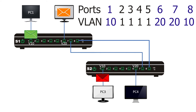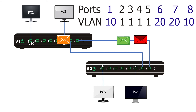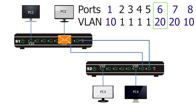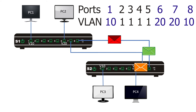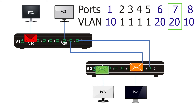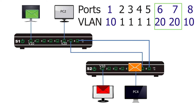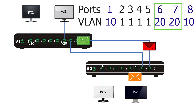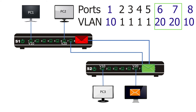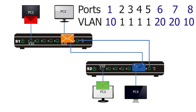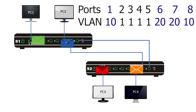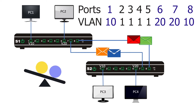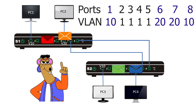PC2 generates a broadcast frame that reaches port 6 (VLAN 20). The switch forwards it from port 7 (VLAN 20) to switch 2's port 7 (VLAN 20), which forwards it from port 6 to PC4. Broadcast frames from PC4 reach PC2 by the same path. Now devices in both VLANs can communicate. Since this method requires as many connections between switches as there are VLANs, administrators normally do not use it.